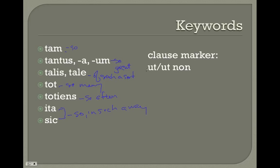Your result clause is going to be introduced with the conjunction ut, or if it's negative, ut non. You can also have ut nemo — for example, 'I ran so fast that no one caught me' would use ut nemo. But it's going to be some real negative. You're always going to have the ut in a result clause.